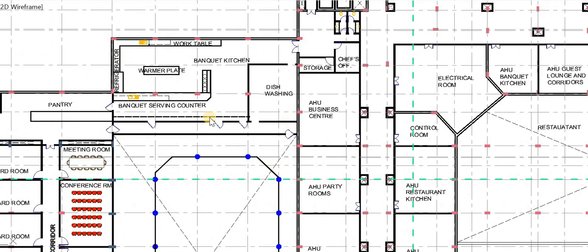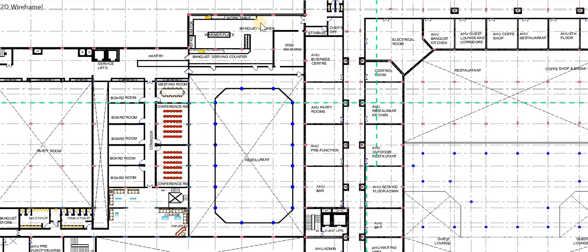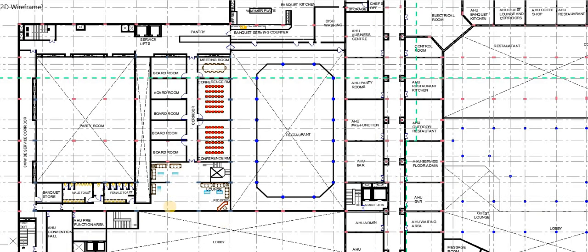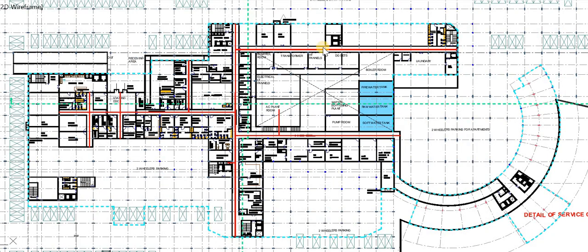We have to design an air handling unit for each and every space in the design. Other services on the service floor include the banquet kitchen, which serves the party hall and also the business center. The business center on the service floor has also been designed with boardrooms and conference rooms.